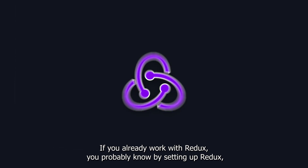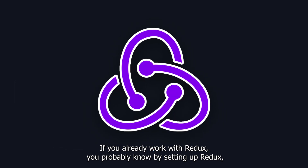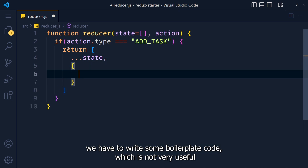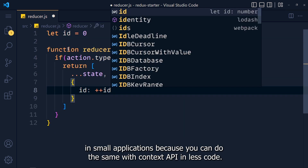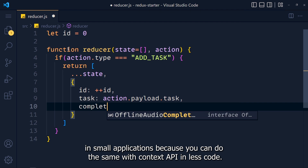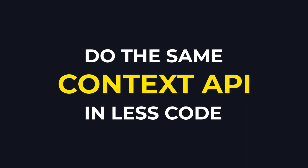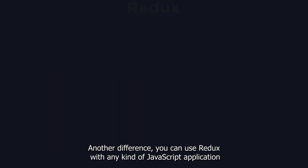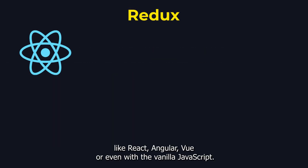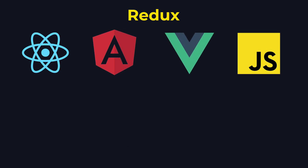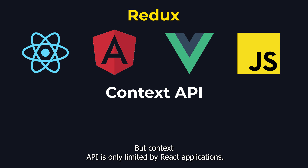If you've already worked with Redux, you probably know that setting it up requires writing some boilerplate code, which is not very useful in small applications because we can do the same with Context API in less code. Another difference: we can use Redux with any kind of JavaScript application — like React, Angular, Vue, or even vanilla JavaScript — but Context API is only limited to React applications.